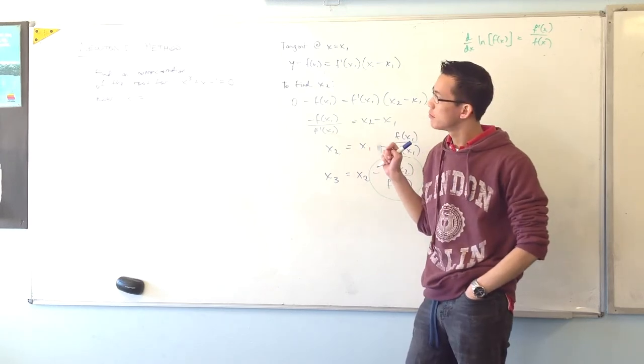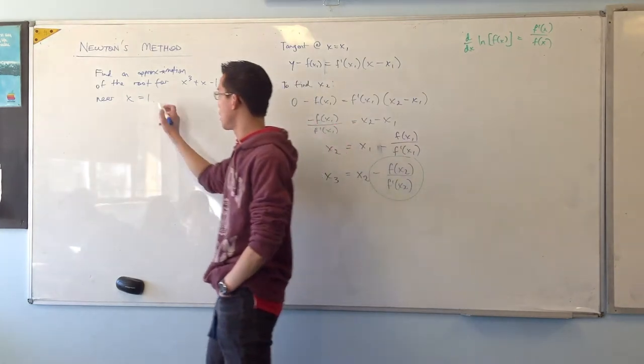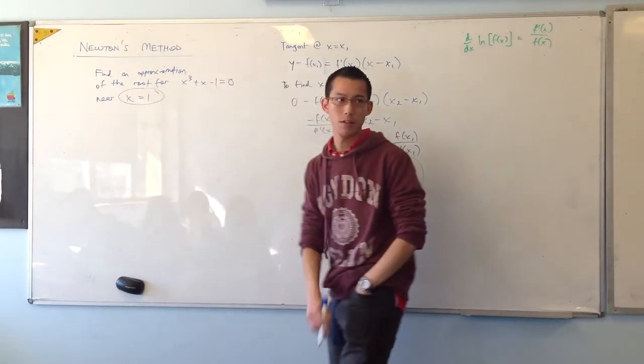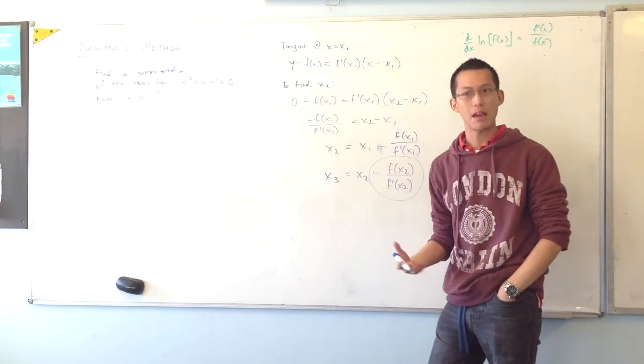Think about it. If I didn't tell you that there's going to be a root near x equals 1, how do you go about determining a good starting point?